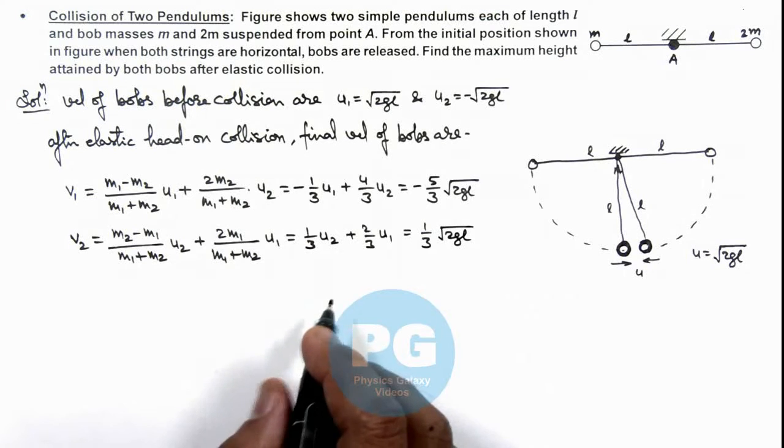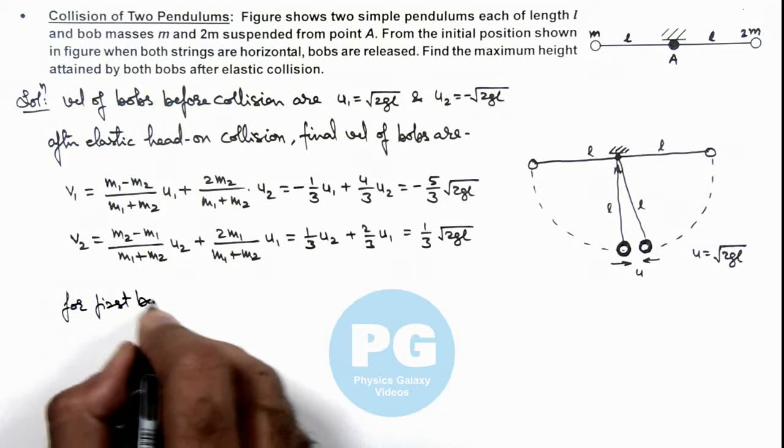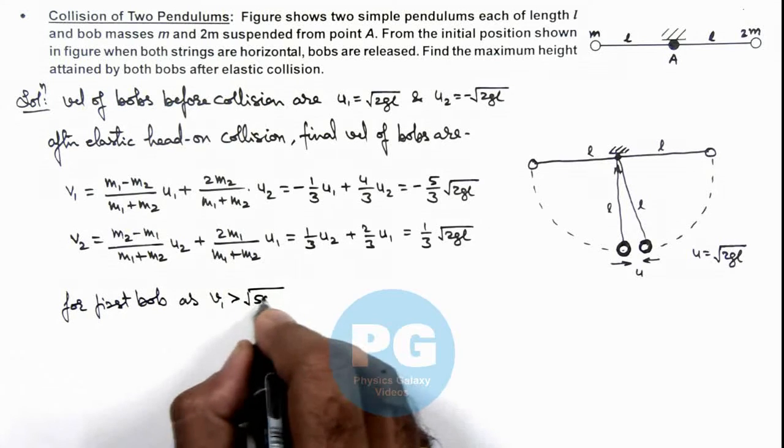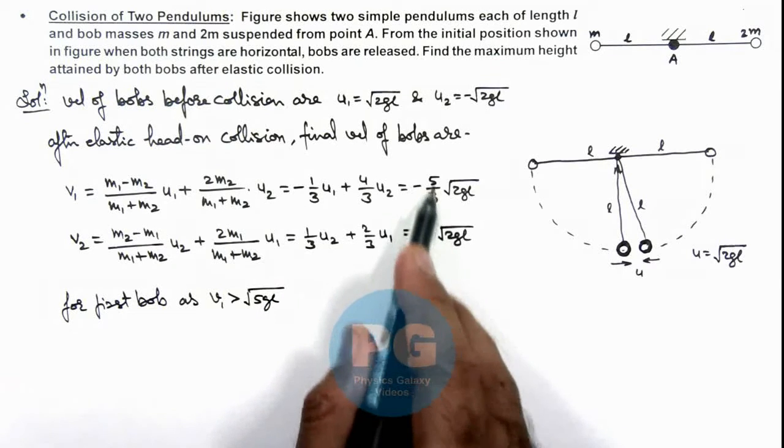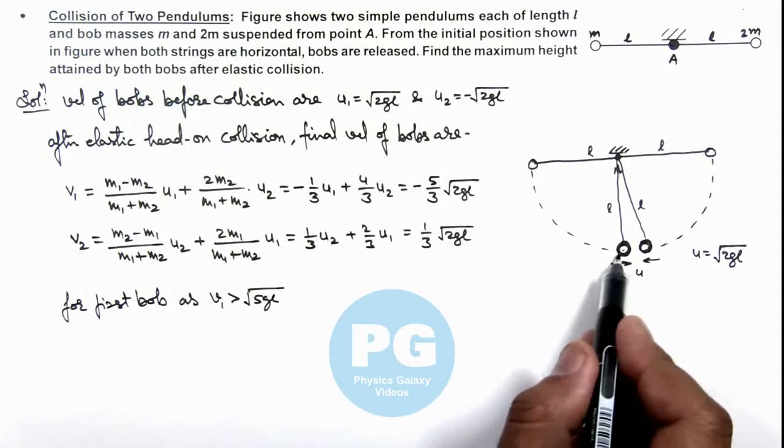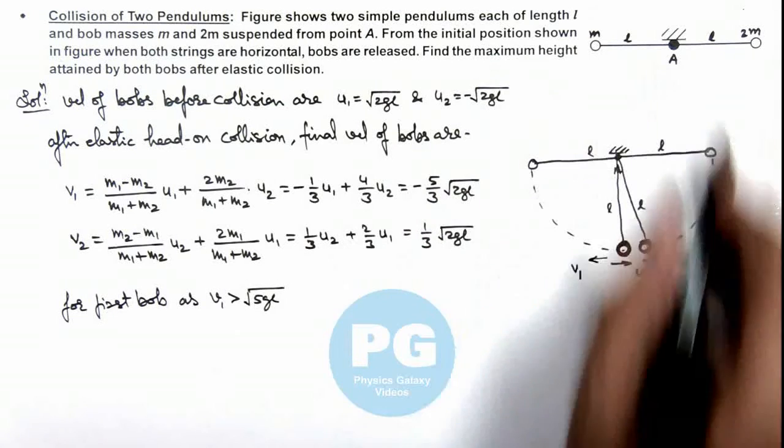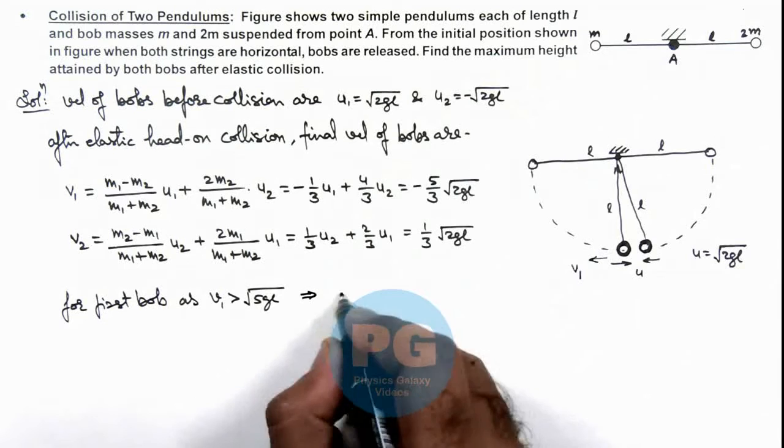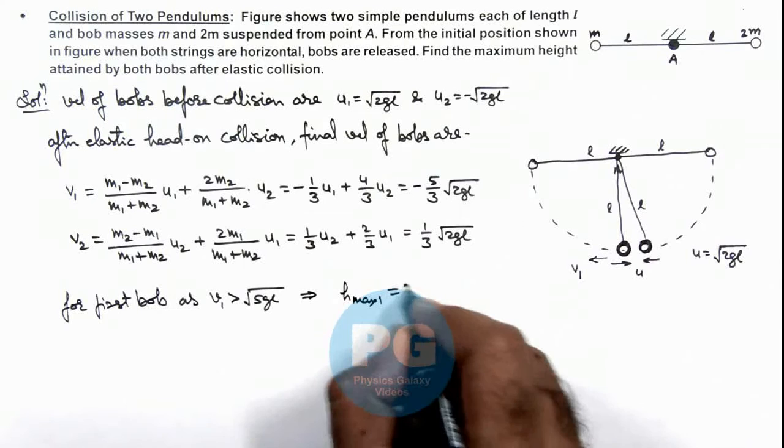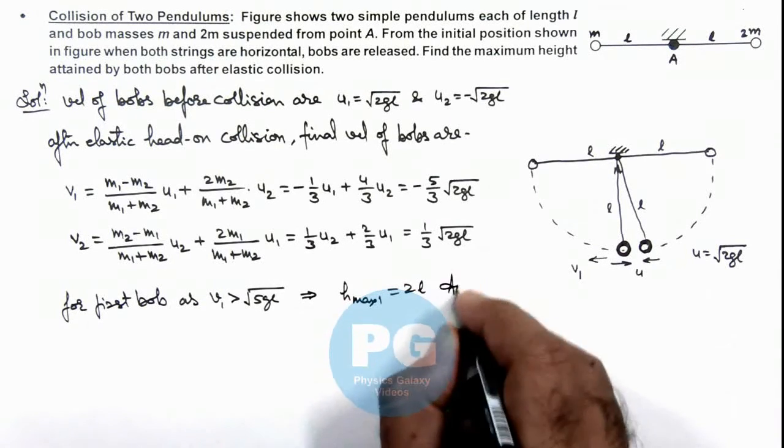Now here you can see for first bob, as v1 is greater than root 5gl, the value 5 by 3 times root 2gl is more than root 5gl. That means after collision when it returns with velocity v1, then it is able to complete the whole circular motion. This implies the maximum height attained by first bob is equal to 2l as it can complete the circular motion. This is one answer for the problem.